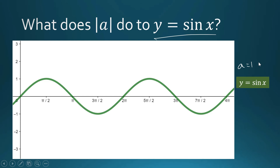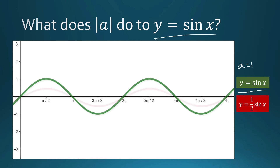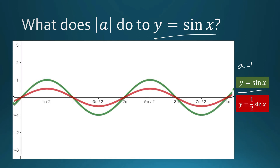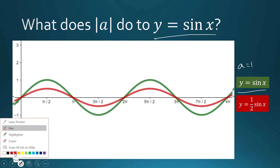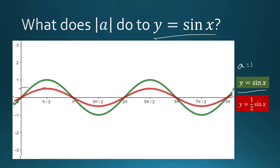What does a do to the graph of our simple sine function if a is one-half? This is the graph of one-half times sine of x. Our new maximum value is positive one-half, and our new minimum value is negative one-half. The amplitude for this function is the absolute value of a, which is equal to one-half.